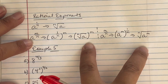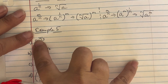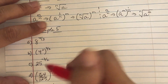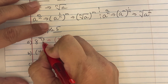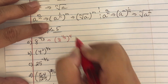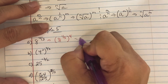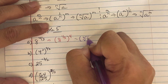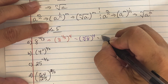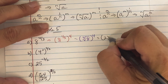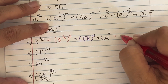Example 5a: 8 to the 4 thirds power. Write it as 8 to the 1 third, moving the numerator power of 4 to the outside — so the cube root of 8 raised to the 4th power. The cube root of 8 is 2, raised to the 4th power. Two multiplied four times in a row gives 16.